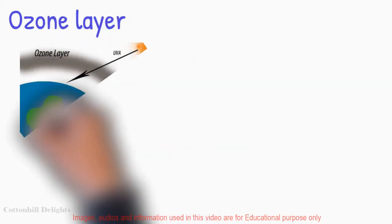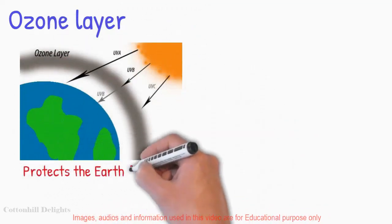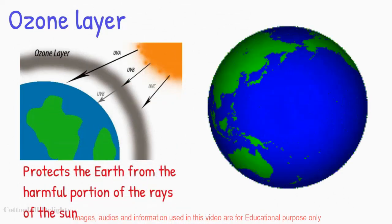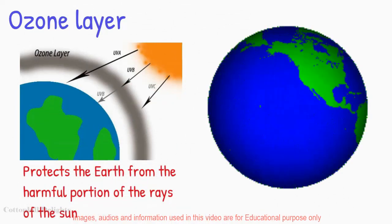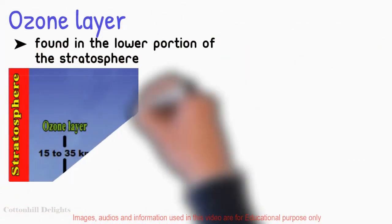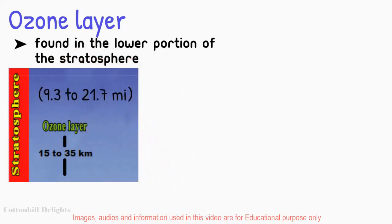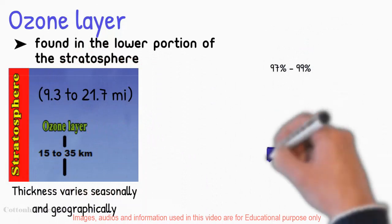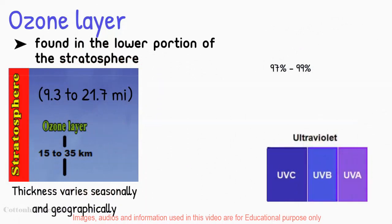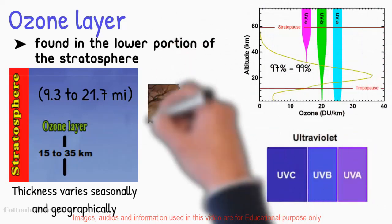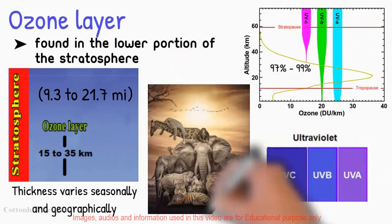What is the ozone layer? The ozone layer is a fragile shield of gas that protects the Earth from the harmful portion of the rays of the sun, thus helping preserve life on the planet. It is mainly found in the lower portion of the stratosphere, from approximately 15 to 35 kilometers above Earth, although its thickness varies seasonally and geographically. It absorbs 97 to 99 percent of the sun's medium frequency ultraviolet light, which otherwise would potentially damage exposed life forms near the surface.